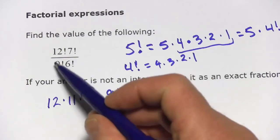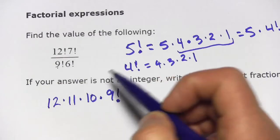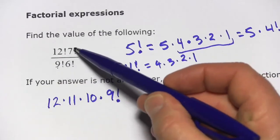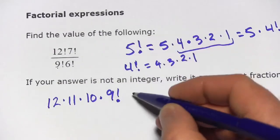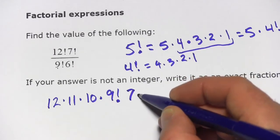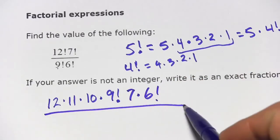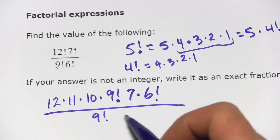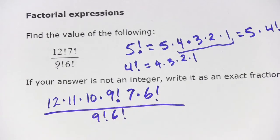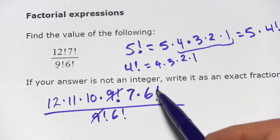And likewise, so that part's going to cancel out this 9 here, this 9 factorial. Likewise, I can do that with the 7. 7 factorial is the same as 7 times 6 factorial. So now on the bottom, I still got my 9 factorial times 6 factorial. Both of those are going to cancel out.